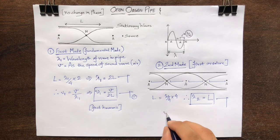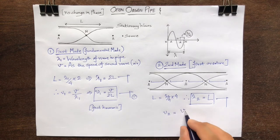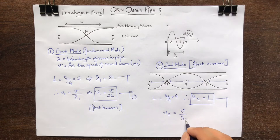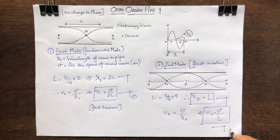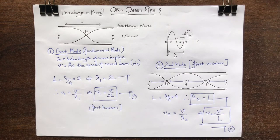Therefore, mu2 is equal to v upon lambda 2, that is v upon L, which is also known as the second harmonic.